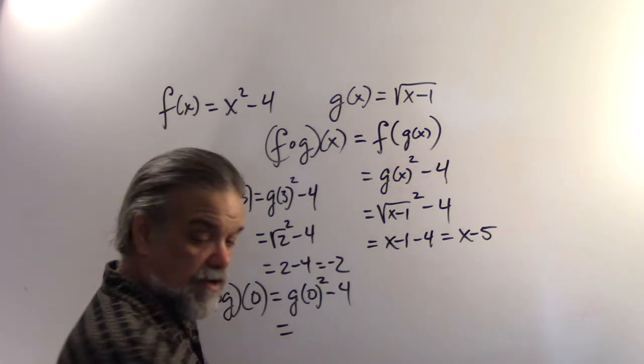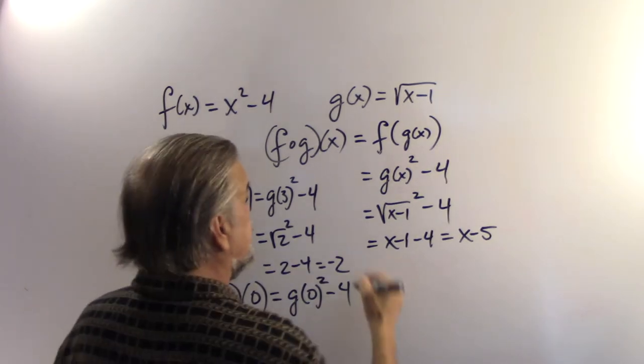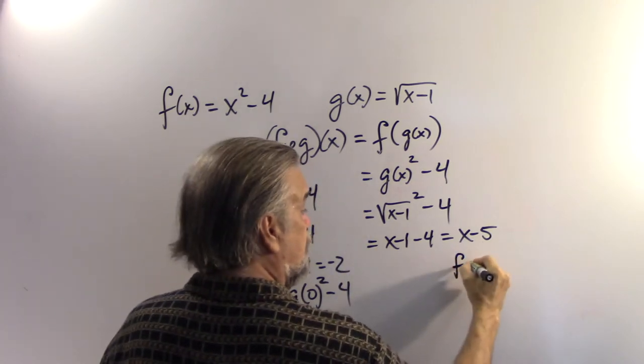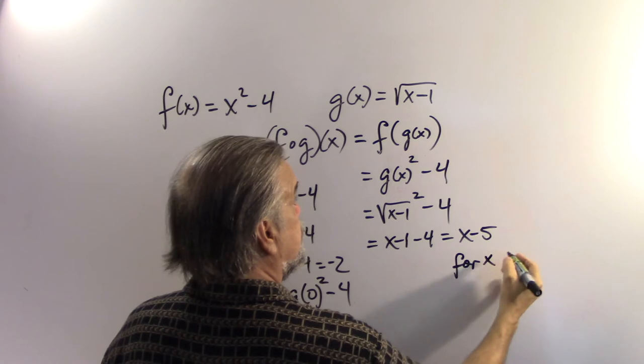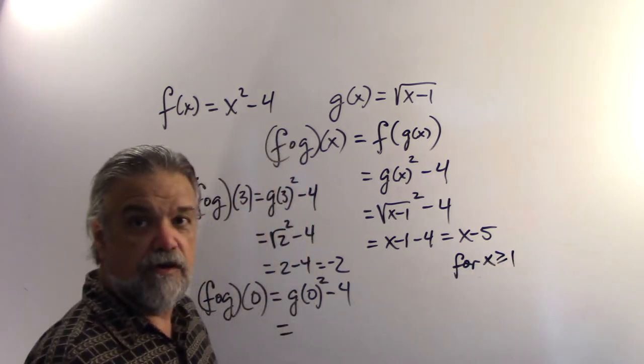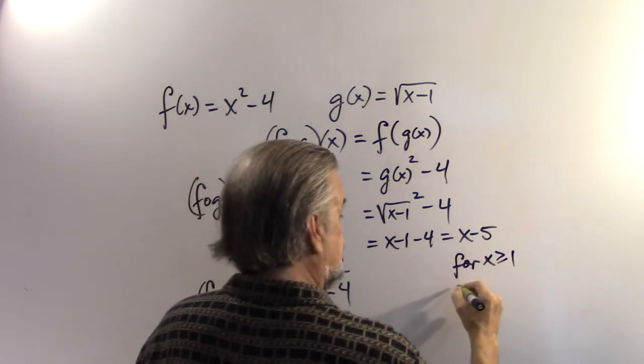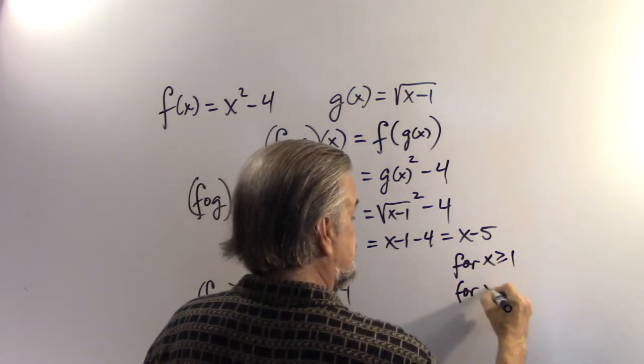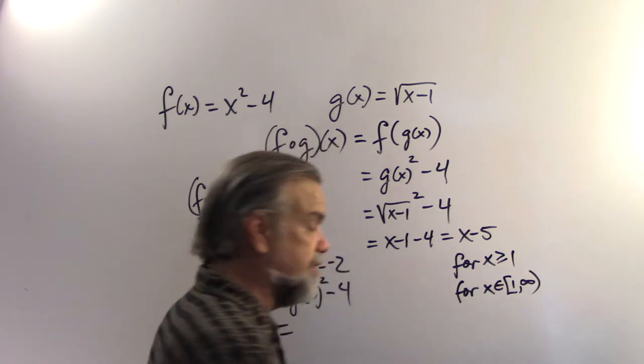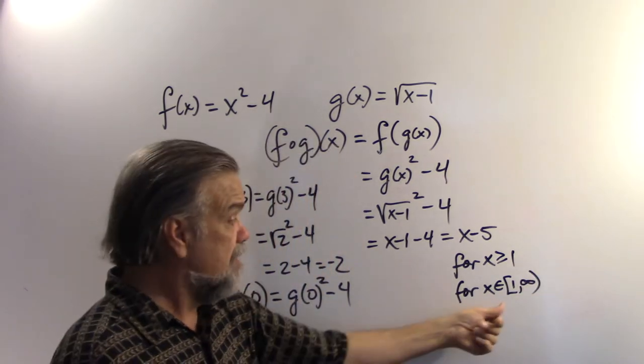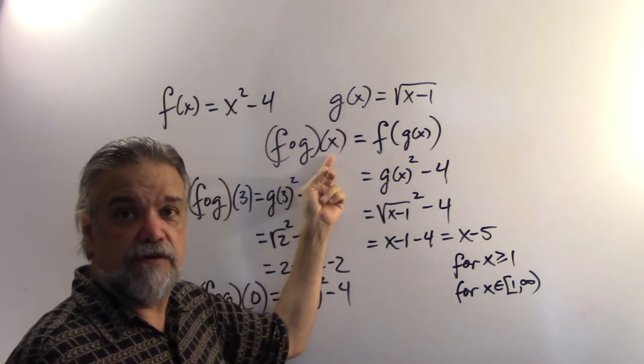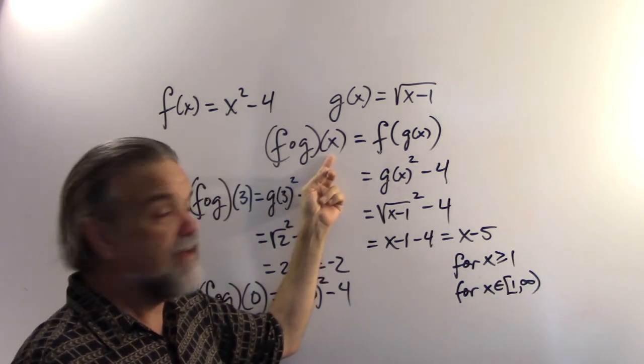So our actual answer would be f of g of x equals x minus 5 for all x that are greater than or equal to 1. Or if you wanted to write that in interval notation, you'd say for all x from 1 to infinity. But any x is smaller than that, well, f of g of x is not going to have any answer at all. It doesn't exist because it's not in the domain.